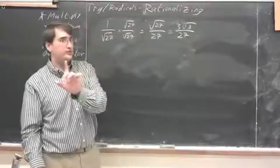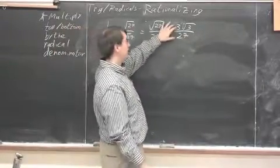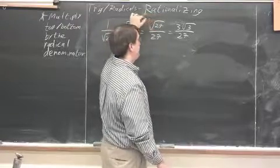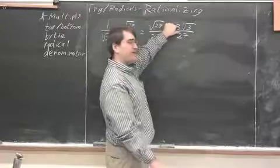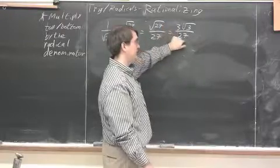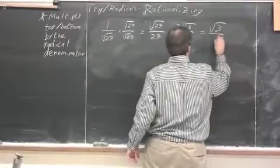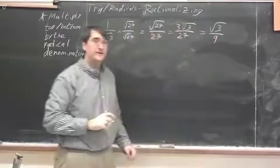And now, and this is the important part, now, because I was able to simplify that radical expression on the top, and because now part of that simplified form can reduce with 27 on the bottom, I'm going to do that. And radical 3 over 9 would be my final answer.